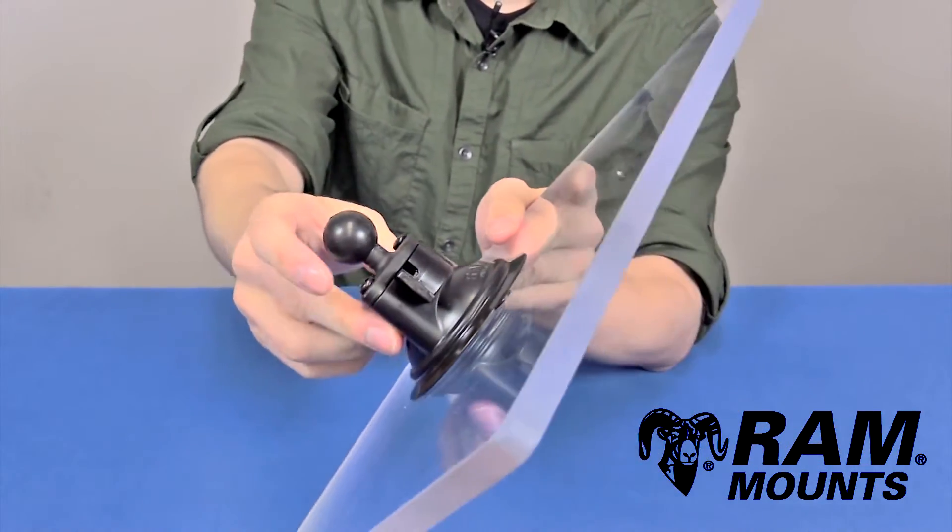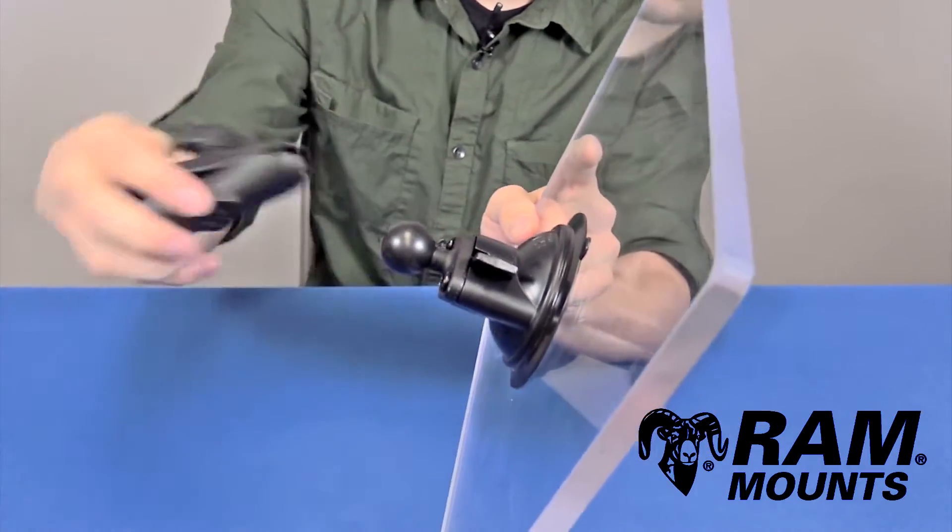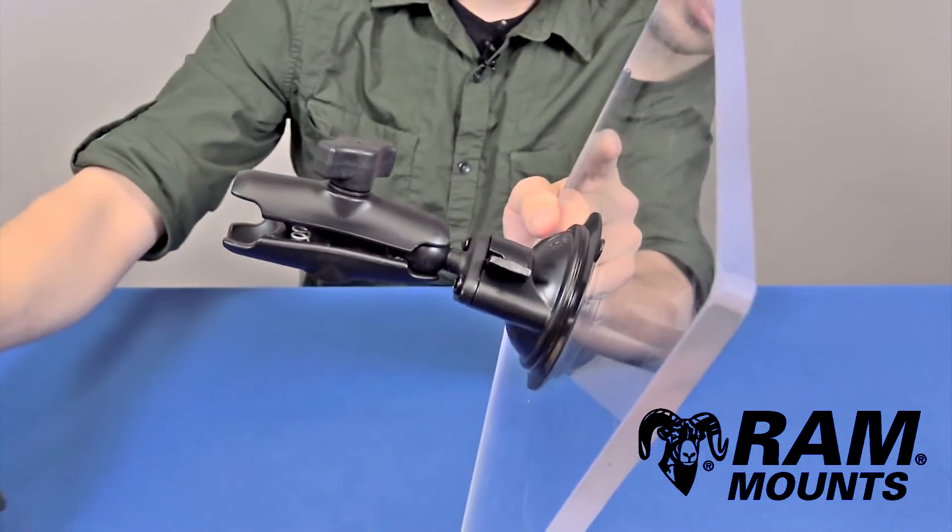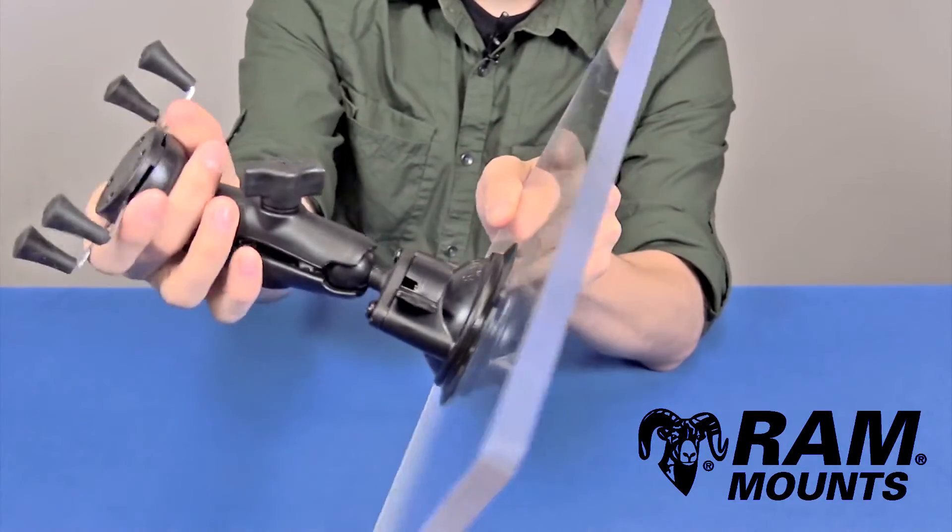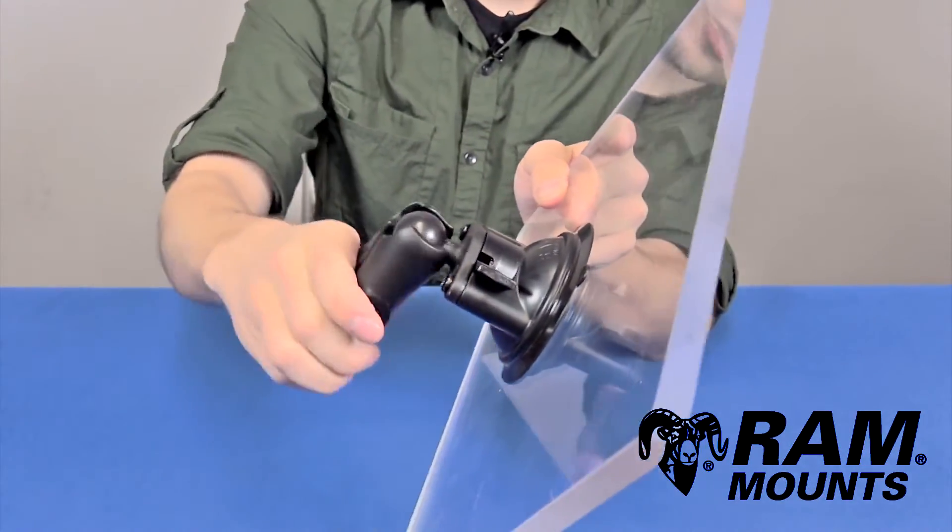It's an incredibly strong hold. The suction itself is more powerful than any of Ram's B-size ball-and-socket mounting systems, so you can integrate any B-size ball-and-socket components onto the suction cup base to create any custom solution.